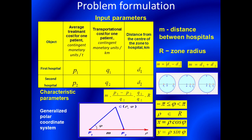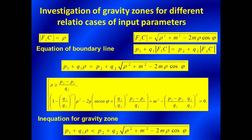On the slide, you can see the characteristic parameters. It should also be noted that in the research, a generalized polar coordinate system was used. The equation of the boundary line and the equation for the gravity zone were investigated.